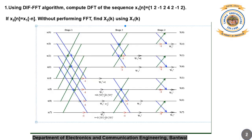Let us begin with tutorial number 7. Let us take the first problem: given x1(n), we are supposed to find the DFT values X(k) using the DIF-FFT algorithm, that is the Decimation in Frequency Fast Fourier Transform algorithm. We have been given x1(0), x1(1), x1(2),